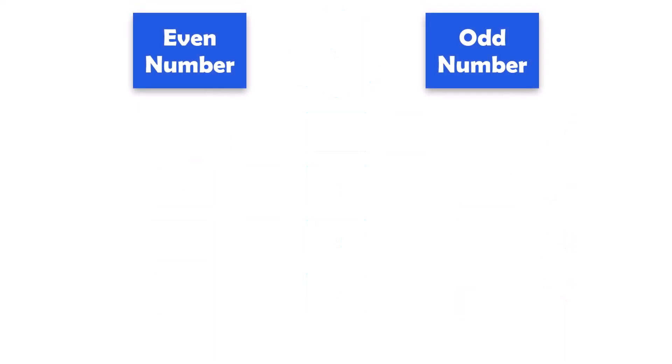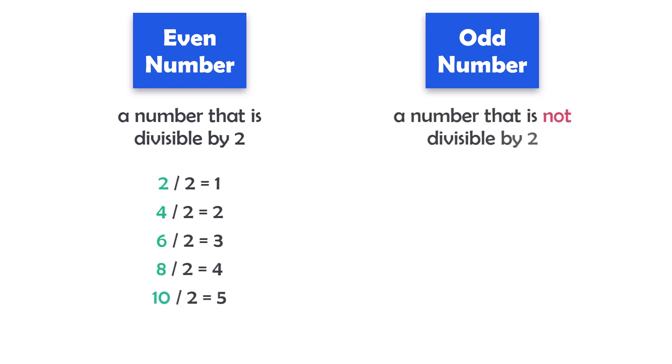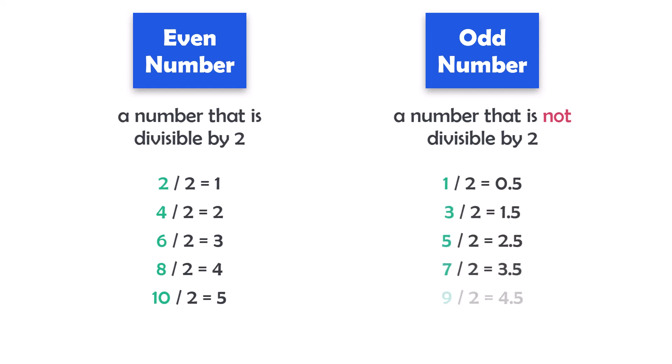The first two definitions are even and odd numbers. An even number is a number that is divisible by 2, meaning it can be divided by 2 without leaving a remainder. Some examples of even numbers are 2, 4, 6, 8, 10, and so on. An odd number is a number that is not divisible by 2, meaning it cannot be divided by 2 without leaving a remainder. Some examples of odd numbers are 1, 3, 5, 7, 9, and so on.